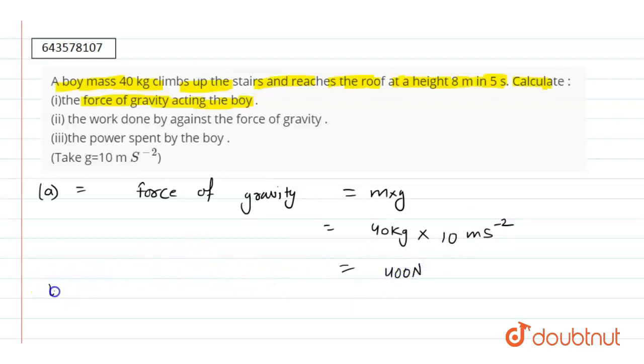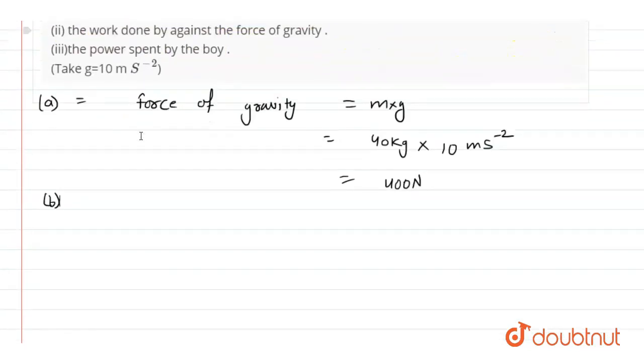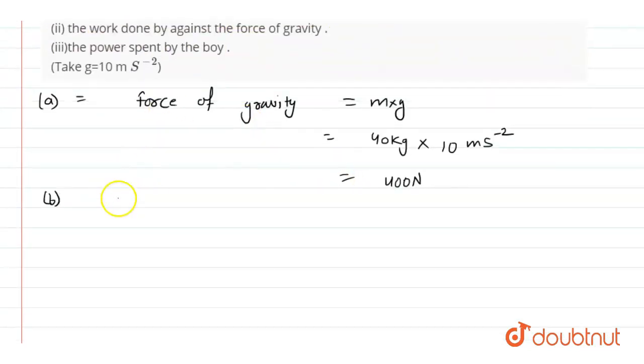In the second part we have to find the work done against gravity. So in this question the work will be equal to mgh. So mass of the boy is 40, gravity is 10 and the height of the roof is 8 meters. So the work comes out to be 3200 Joules.